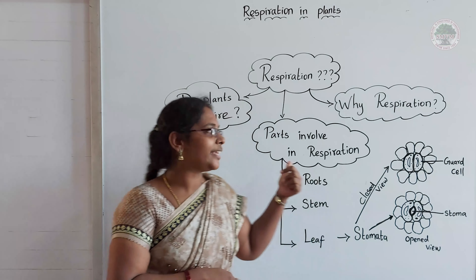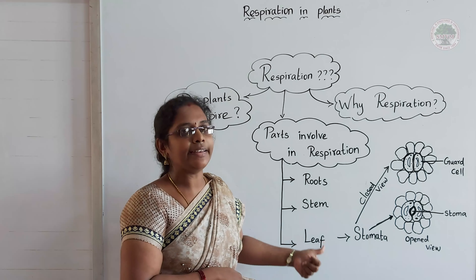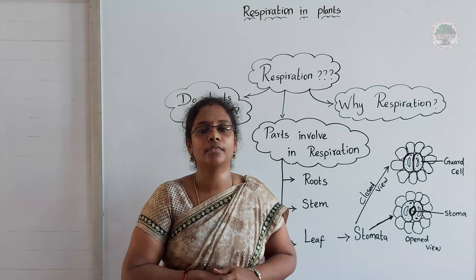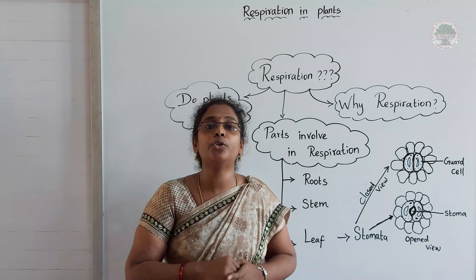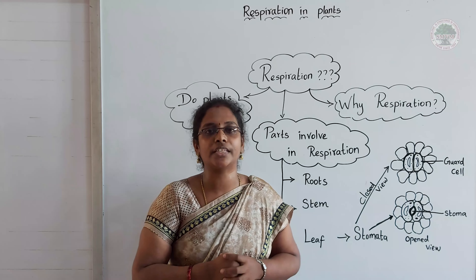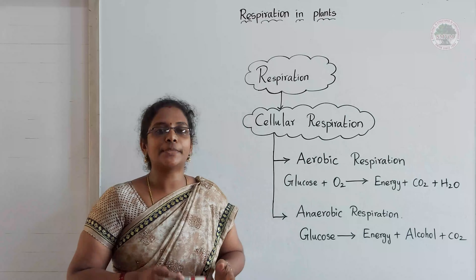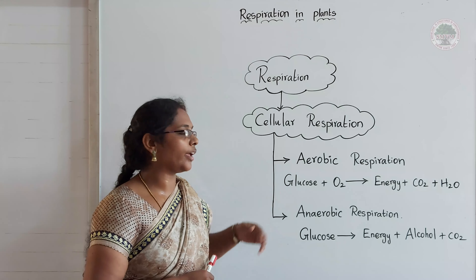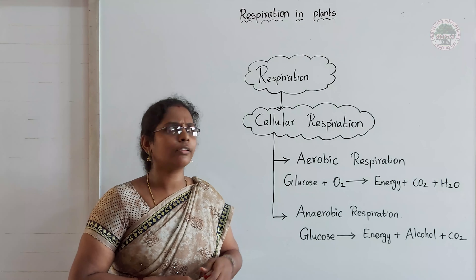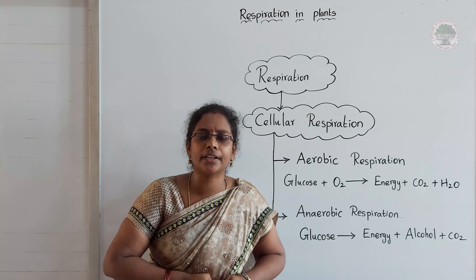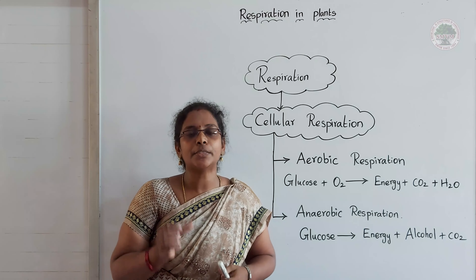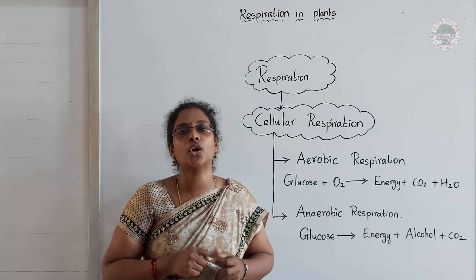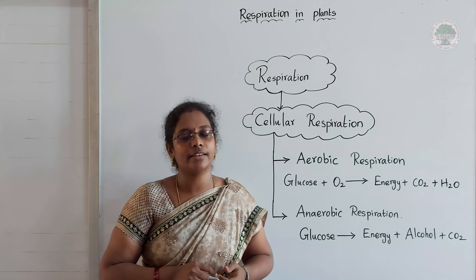So by all these parts — root, stem, and leaf — the plant can respire. Now we are going to discuss two different kinds of respiration: aerobic and anaerobic respiration. This process is also called cellular respiration because it happens inside the cell.